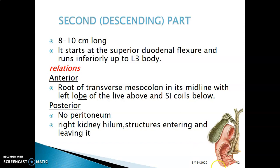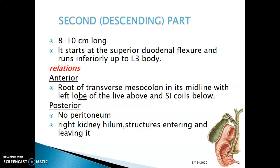Moving to the second part of the duodenum — the descending portion of the C. It's 8 to 10 centimeters long and starts from the superior duodenal flexure, turning inferiorly to the L3 body. Anterior to the second part of the duodenum, you have the root of the transverse mesocolon, as well as the left lobe of the liver above, and coils of small intestine below.